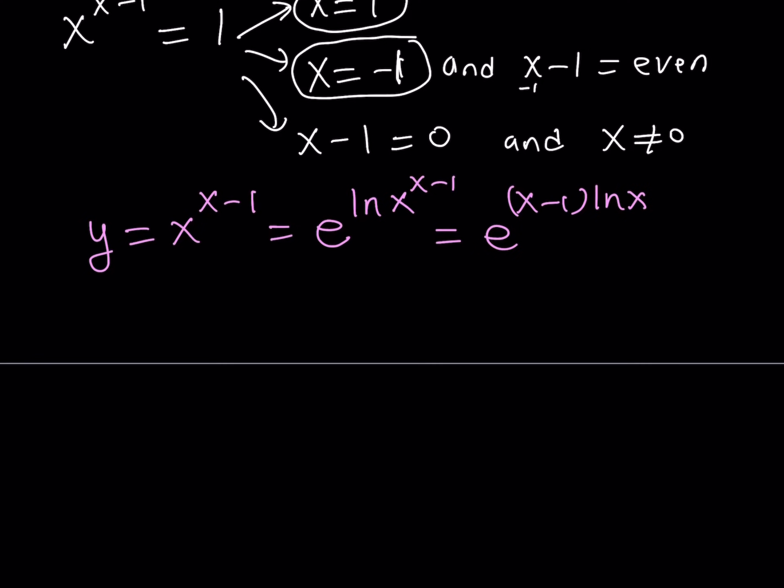Otherwise, I have to use implicit or some other way to do it. Now let's go ahead and differentiate it. This is e to the power u, where u is a function of x. As you know, the derivative of e to the power u is e to the power u times u prime.